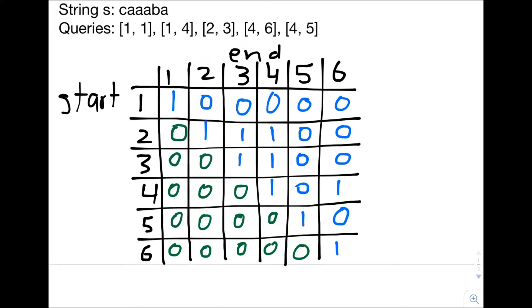We can do the same thing for any of these queries. Like the query 1,4, when we take the sum of the box, and this box from 1 to 4, from the start and from the end, the sum is 7. Hence the answer to the query is 7.